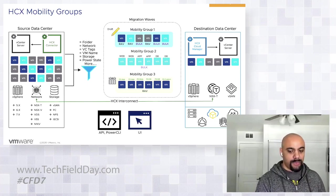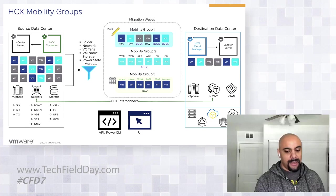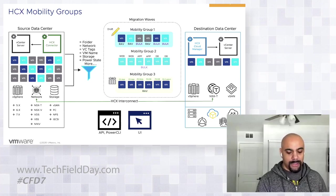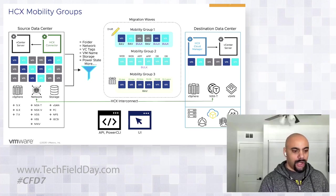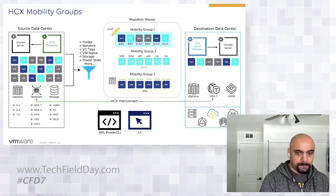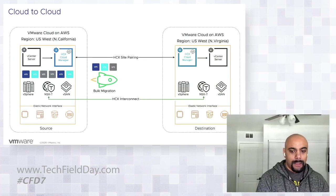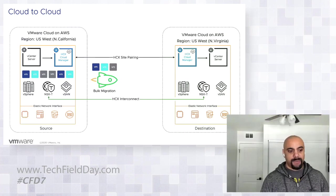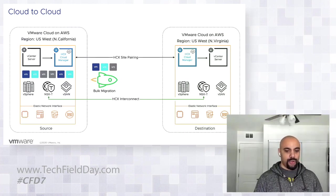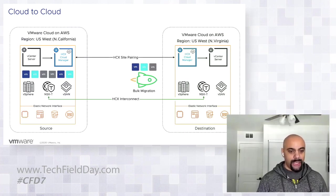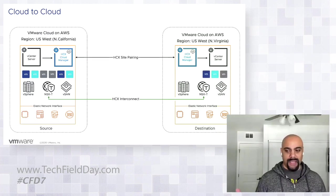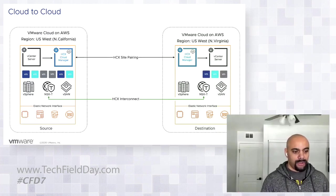Mobility groups can also be used via API, PowerCLI, and UI — available for enterprise licensing and definitely available for on-prem to on-prem use cases. HCX can also be used to migrate between two different SDDCs in two different regions within VMware Cloud on AWS.